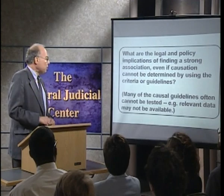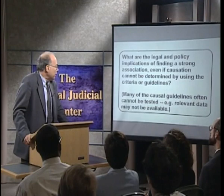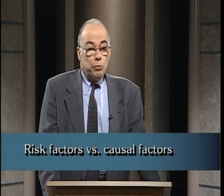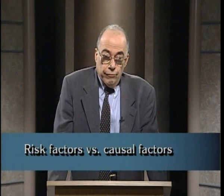What are the legal and policy implications of finding a strong association even if causation cannot be determined using these criteria or guidelines? That is, we show a strong association — the relative risk is high — but when we go to that list of guidelines, we are not able to document them. Often we just don't have the data; the appropriate studies haven't been carried out. This represents a major problem for the courts in interpreting epidemiologic evidence. We speak of factors being risk factors rather than causal factors only because the evidence is not strong enough to conclude causation. It poses serious problems for people faced with interpreting the legal implications of a strong association without the causal guidelines fulfilled.